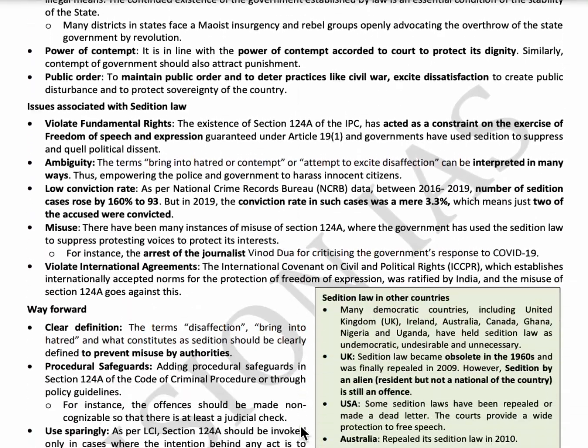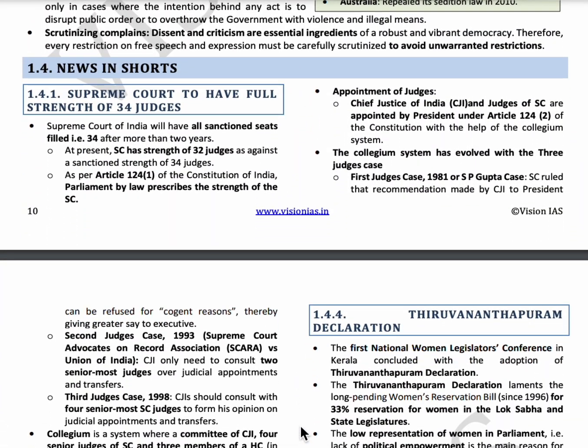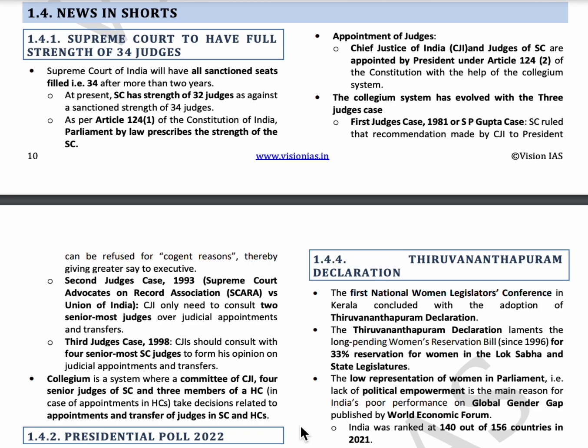The next topic is the Supreme Court having a full strength of 34 judges. At present we have the CJI and 33 judges, totalling 34. According to Article 124(1), Parliament prescribes the strength of the Supreme Court by law. Article 124(2) states that the CJI and Supreme Court judges are appointed by the President with the help of the collegium system — a committee consisting of the CJI, four senior judges of the Supreme Court, and three members of High Courts — which gives recommendations to the President on appointment or transfer of judges.